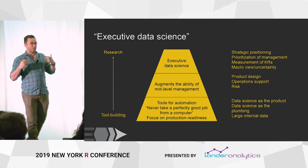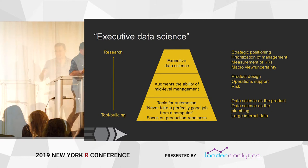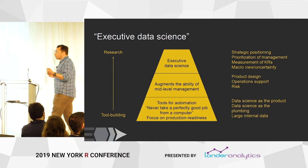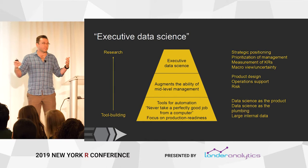In the middle, we've got tools that augment the abilities of humans — models that help you understand the world, dashboards, and all this sort of stuff. A/B testing is a great example where you're running experiments to improve product design. At the top is a field that certainly exists but I don't think we have a name for — I like to call it executive data science. It's the sort of data science that answers research questions that senior executives have, such as strategic positioning: what product offering should a firm have to position itself within a market?